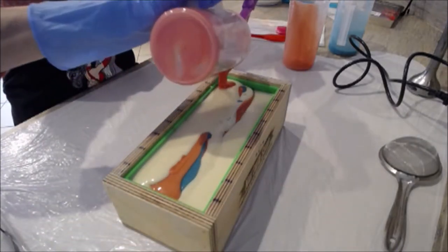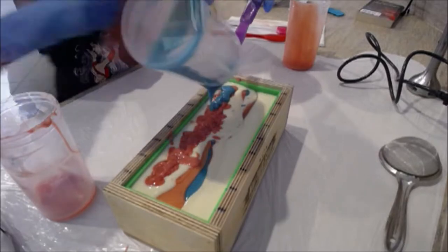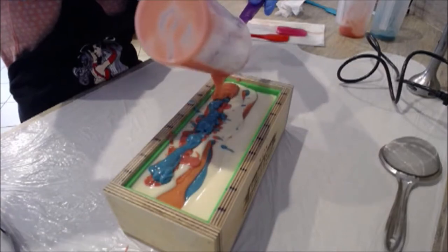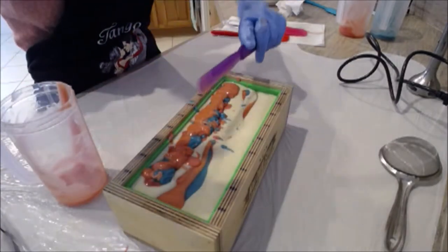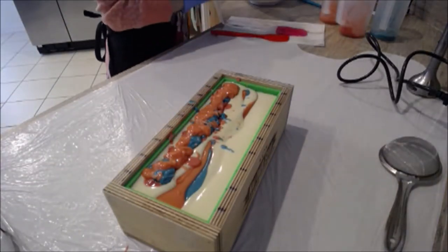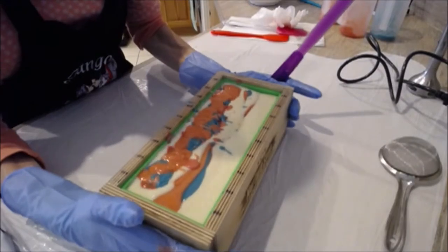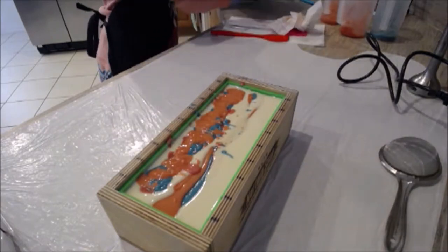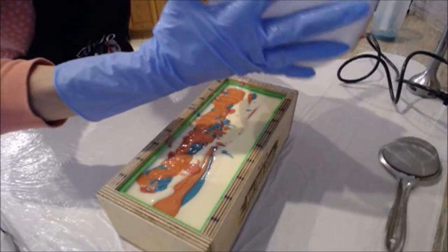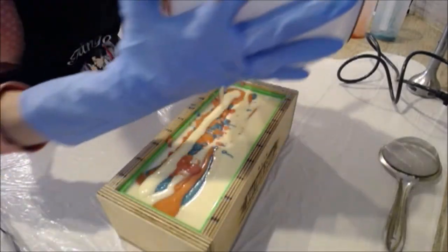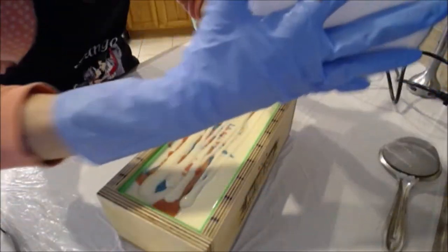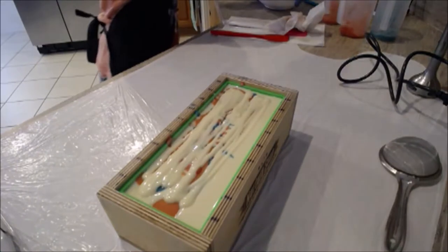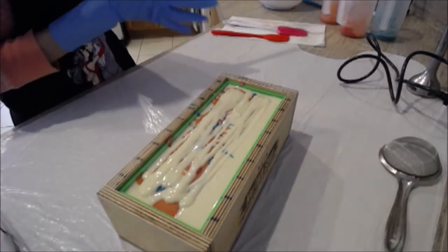Finish up with my remaining colors. Pink, the teal, the coral orange. Give it another tap. There we go. And I'm going to pour just a little bit of my remaining white over top. There we go. Okay. All right. Now it's time to butterfly.